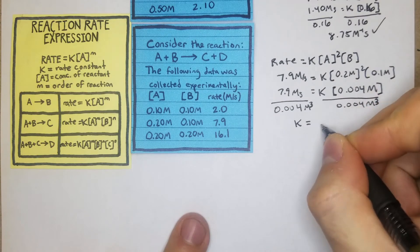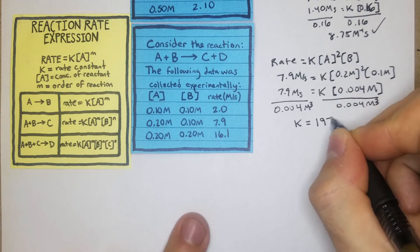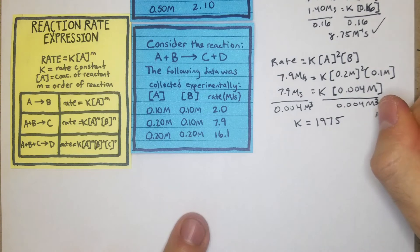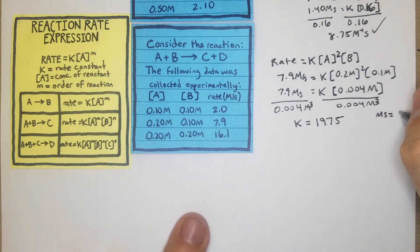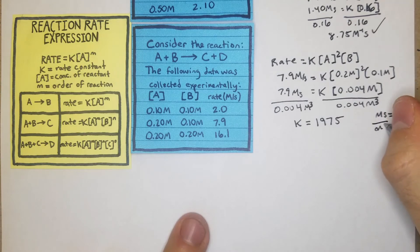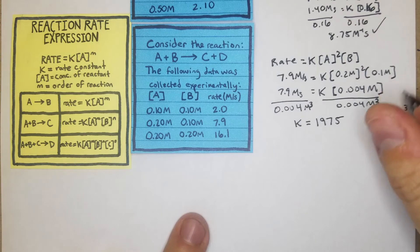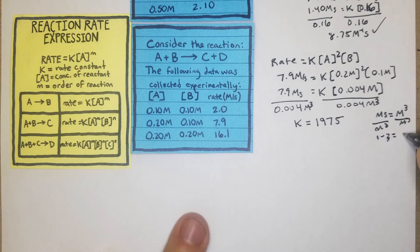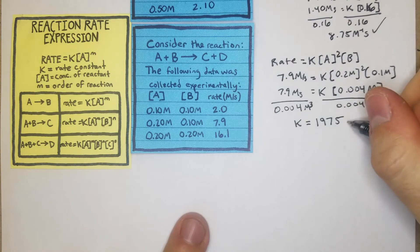Dividing both sides by 0.004 M³, our K value is 1975. For the units, we had M/s on one side and M³ on the other, so taking 1 minus 3 gives us M⁻²·s. So K equals 1975 M⁻²·s.